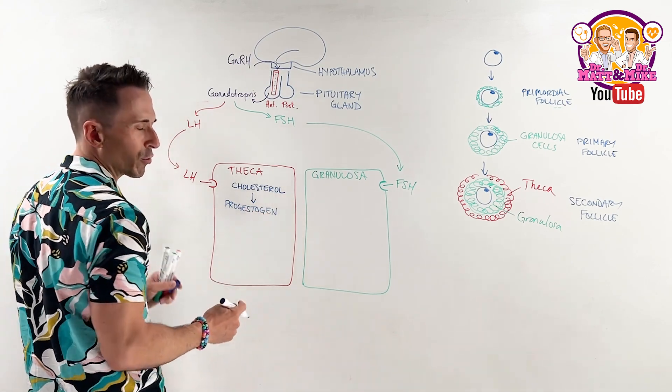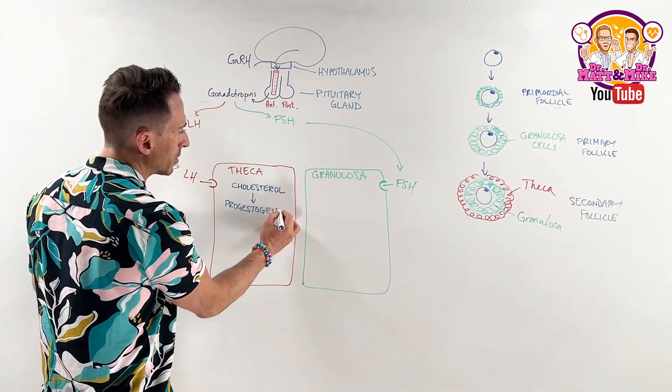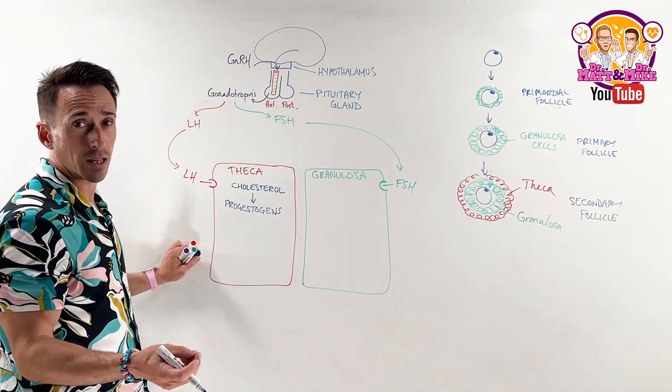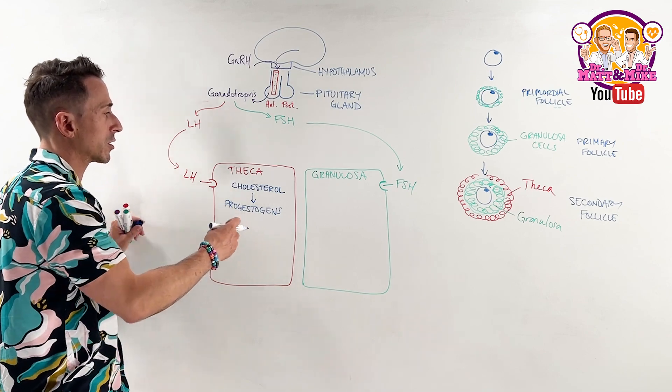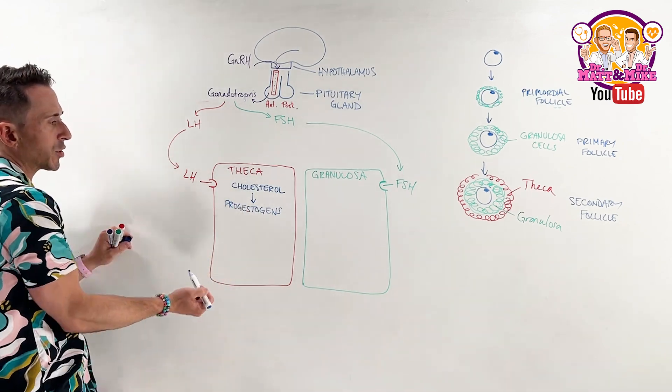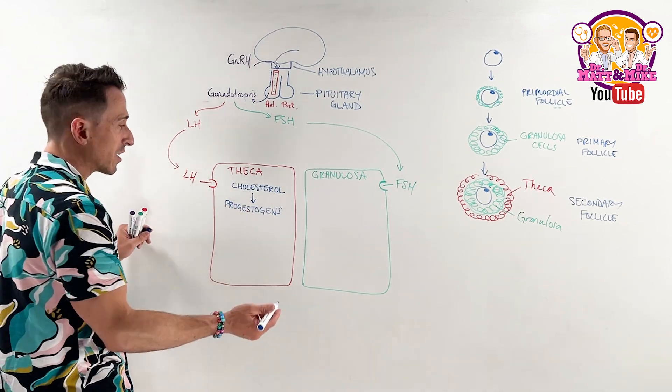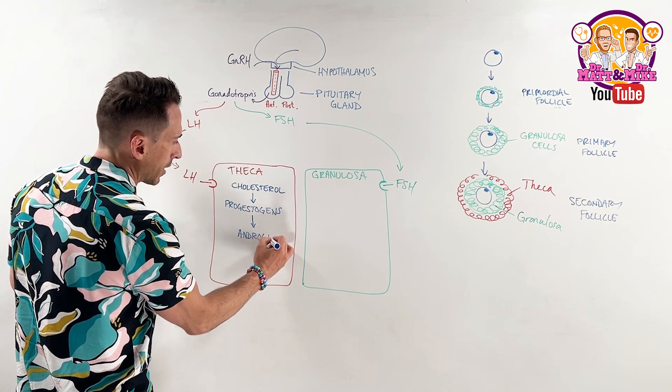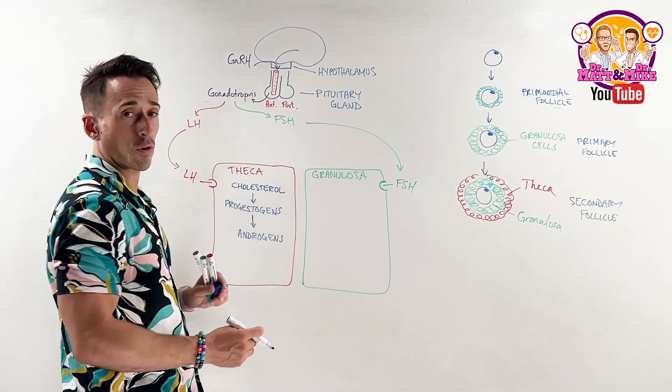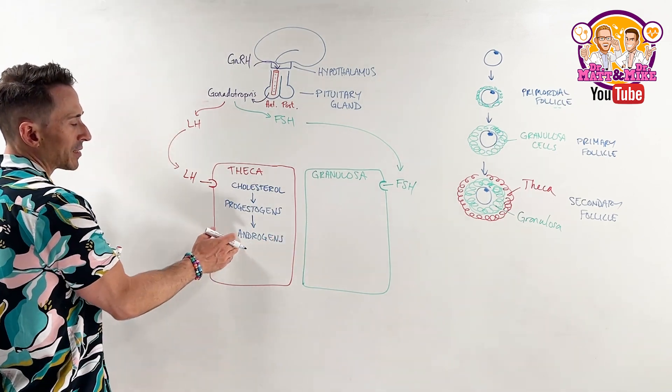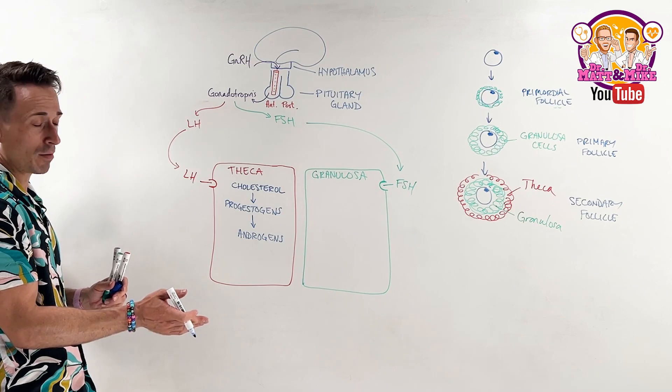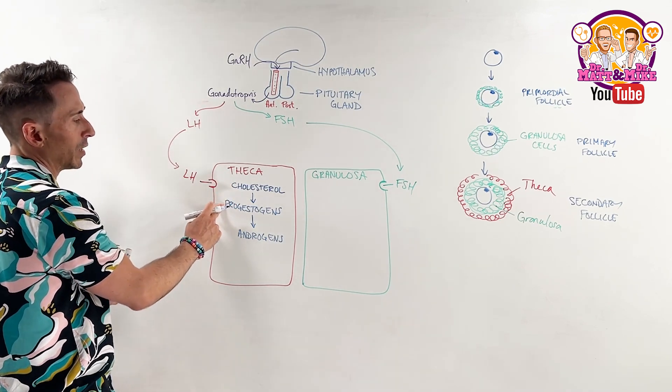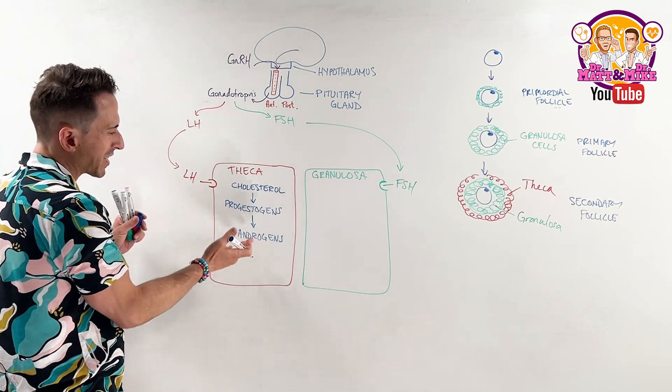You're probably thinking, do you mean progesterone? Yes, I do. Progestogens is the umbrella term that we use for progesterone, but also for pregnenolone as well. I said progestogens because it makes a bunch of different ones. It goes from cholesterol to progestogens and it goes from progestogens into androgens. And androgens include things like testosterone and DHEA. But it's stuck here. It can't go any further. This is because luteinizing hormone stimulates cholesterol to undergo the change into progesterone and then to androgens, but it can't go any further.